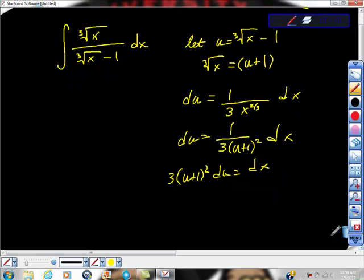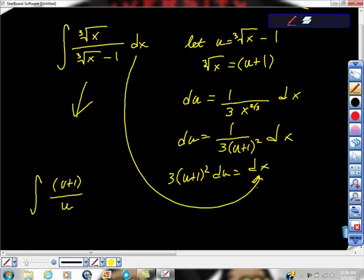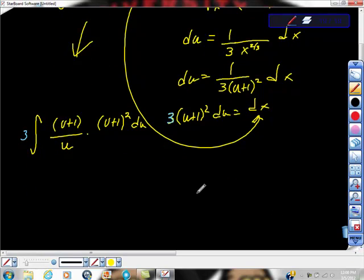Here, I'm just going to rewrite this using my u substitution. So we'll get u plus one, right? Over u, dx, but dx is equal to this, isn't it? So I'm going to substitute this in, so times three. Pay attention for a second. I'm going to take this three, I'm going to pull it all the way out to here. And then, u plus one squared du. So far, so good?